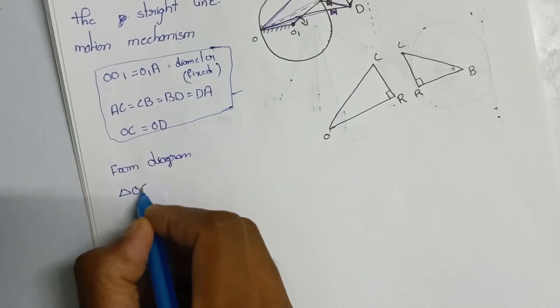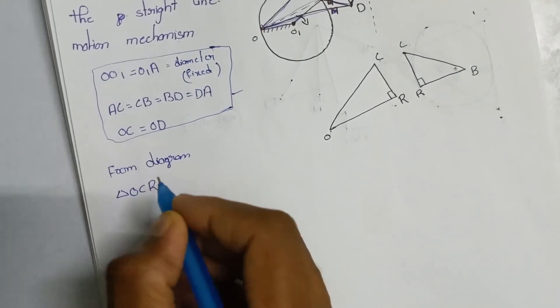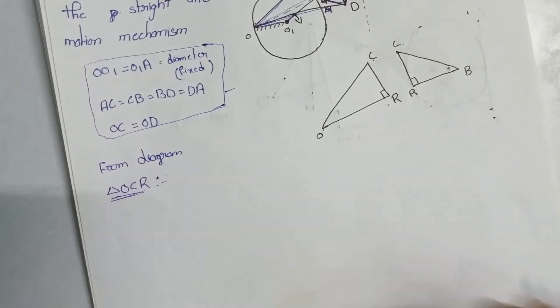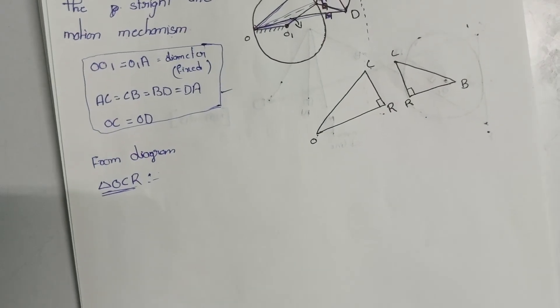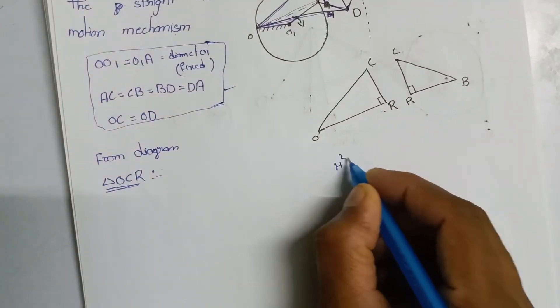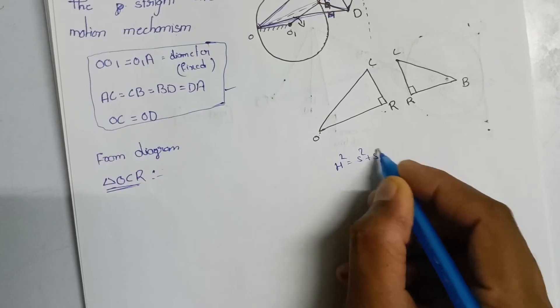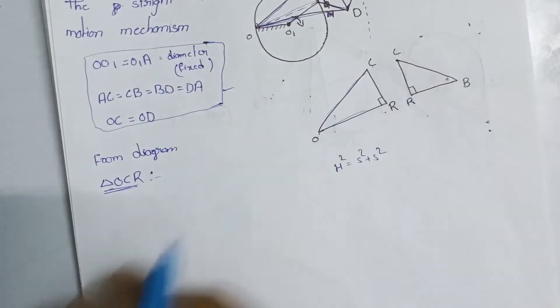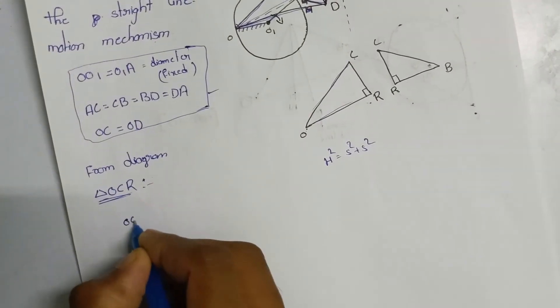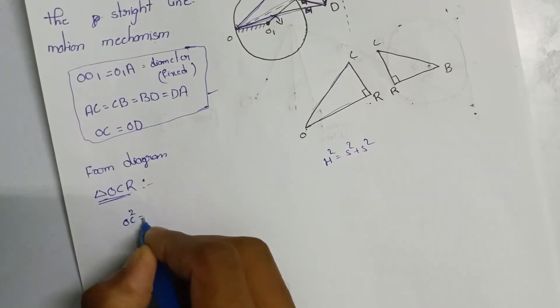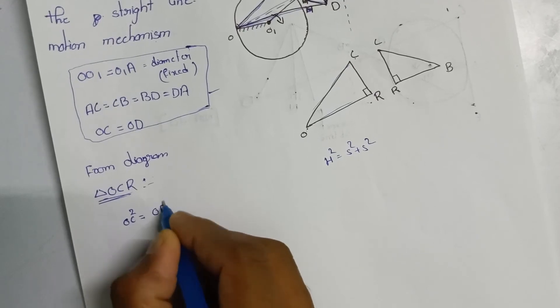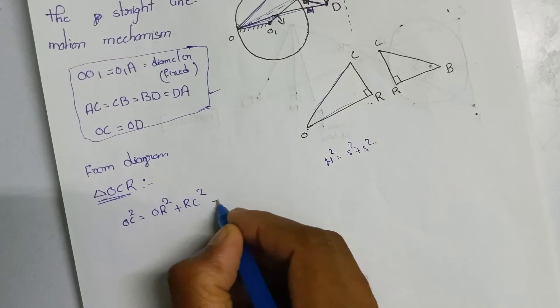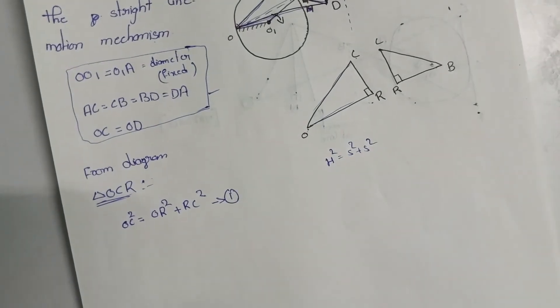From the diagram, triangle OCA: By Pythagoras theorem, hypotenuse squared is equal to side squared plus side squared. OC squared is equal to OR squared plus RC squared - equation one.